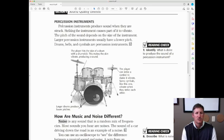Percussion instruments produce sound when they are struck. Striking the instrument causes part of it to vibrate. The pitch of the sound depends on the size of the instrument. Larger percussion instruments usually make lower pitch. Drums, bells, and cymbals are percussion instruments.